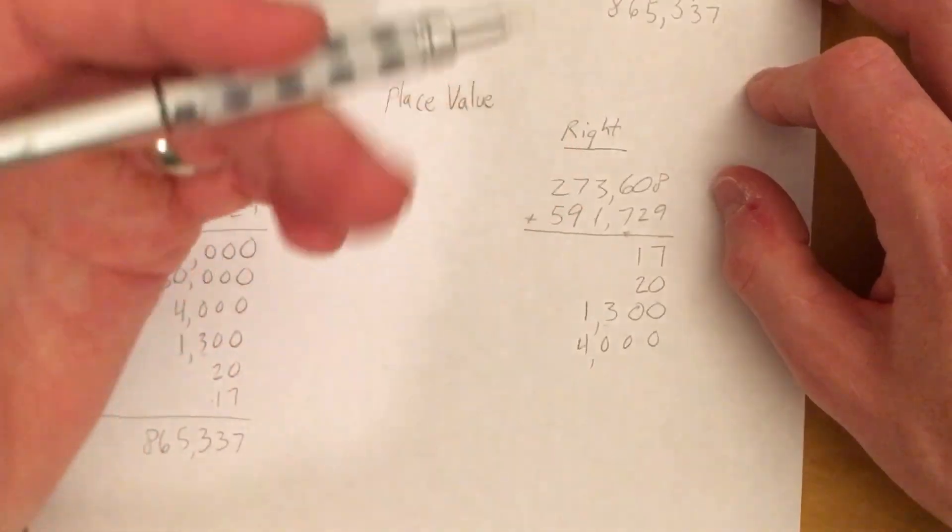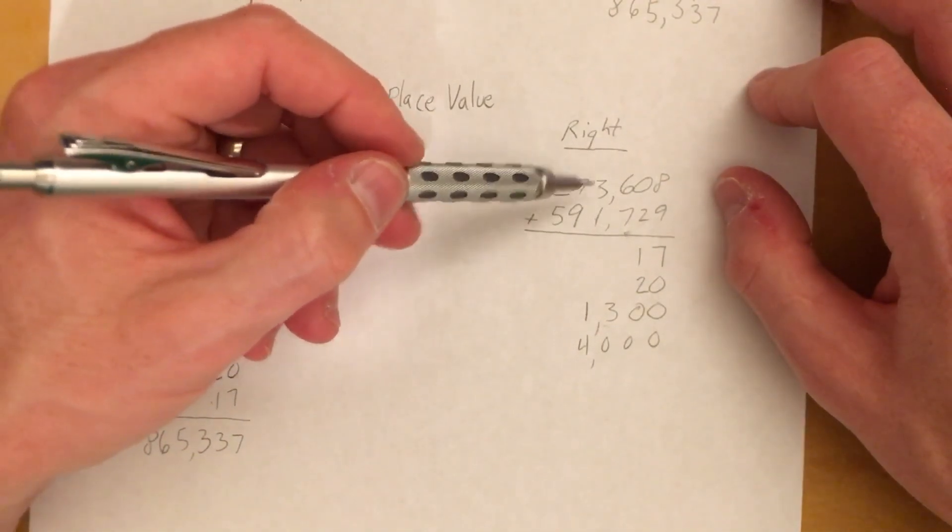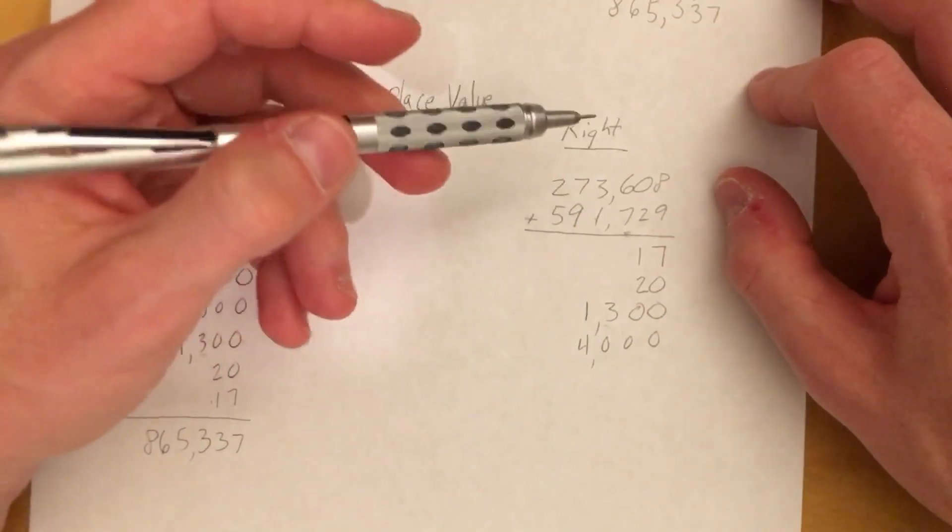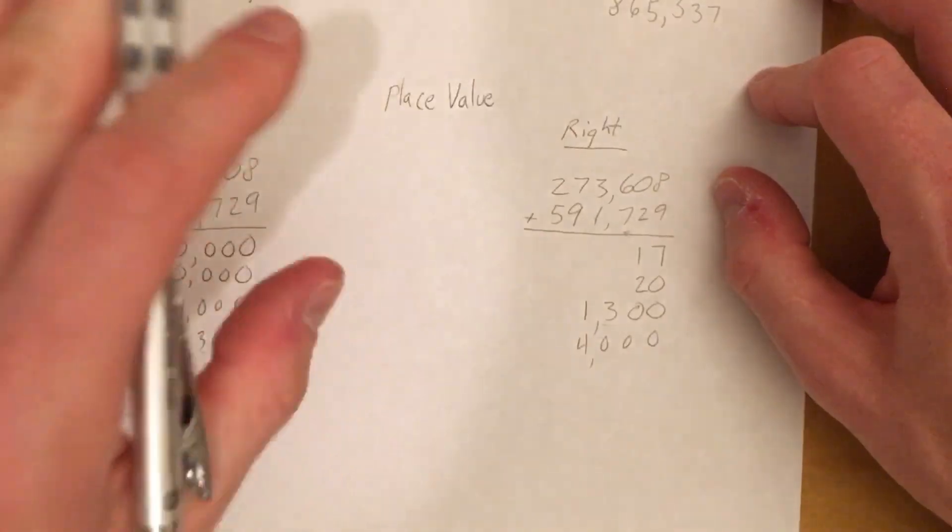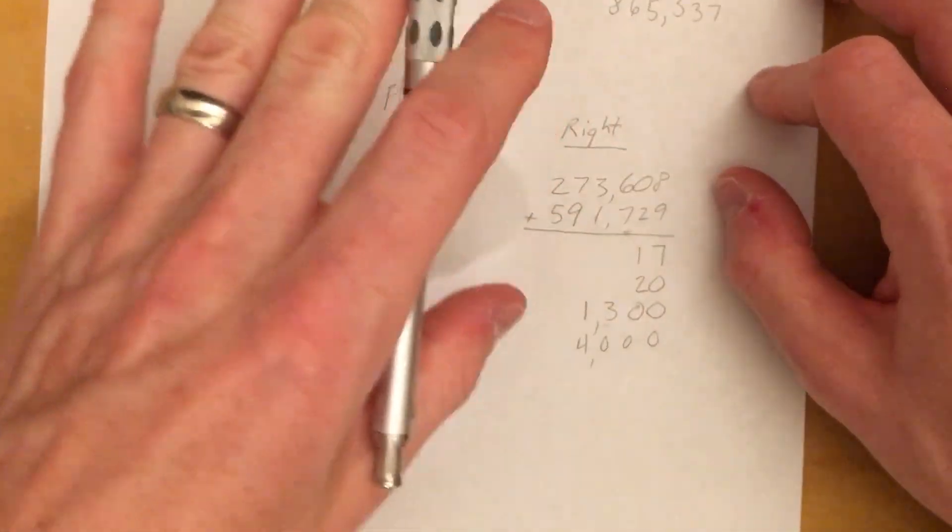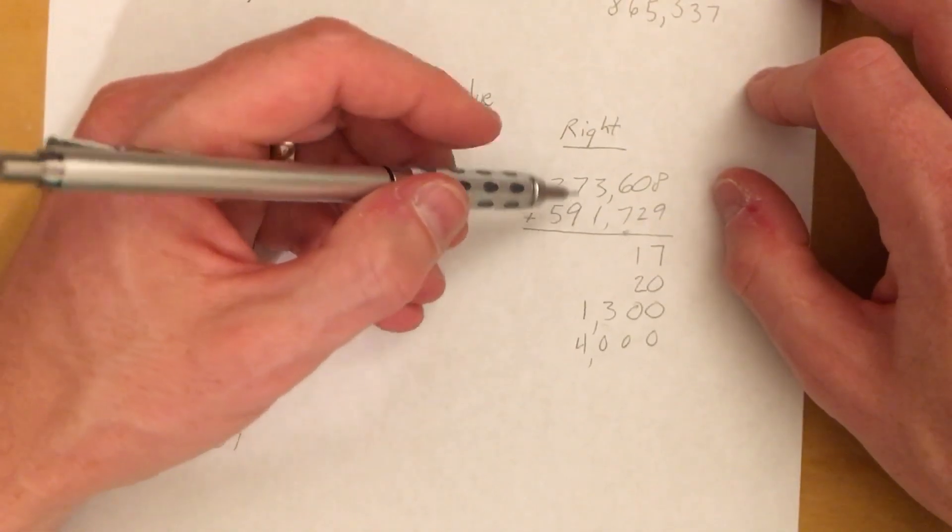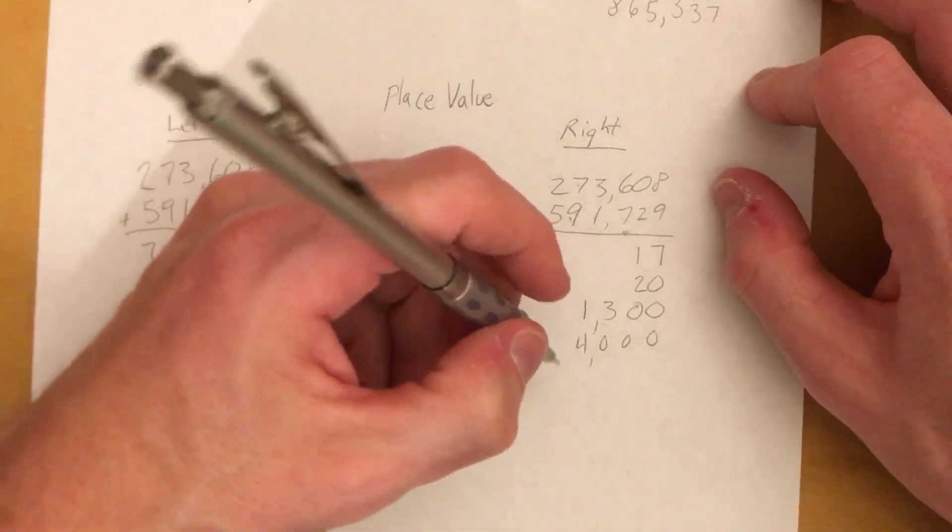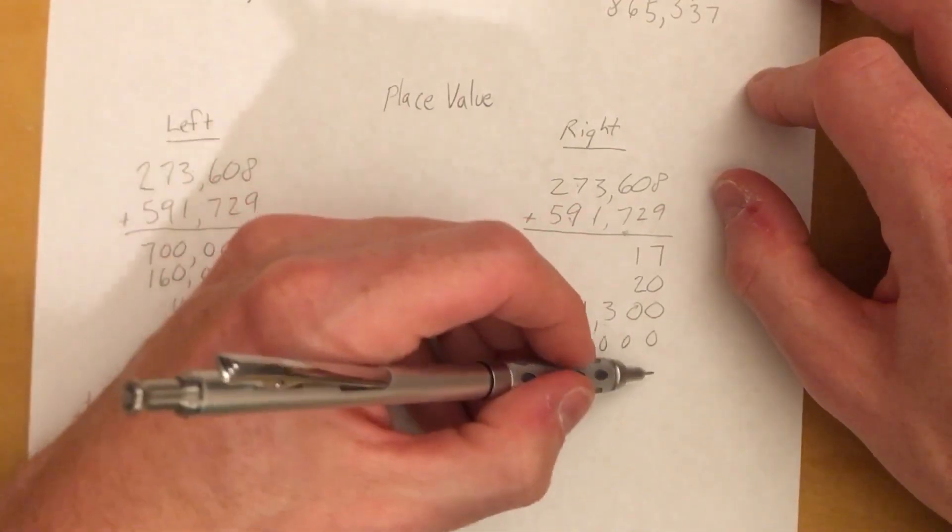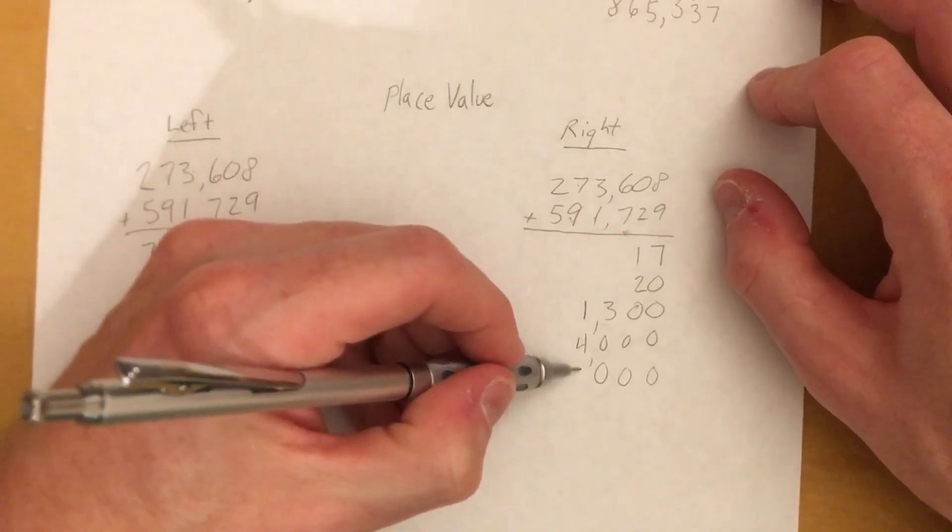Then we move over into the ten thousands, and once again, this is where it could get a little confusing, so just take your time. We have 160,000 because we have 70,000 plus 90,000. So what I would do is I would actually go this way in this case, knowing that I have to have four zeros, my six, and my one. So that works a little bit better for me with the bigger ones, just going this way.